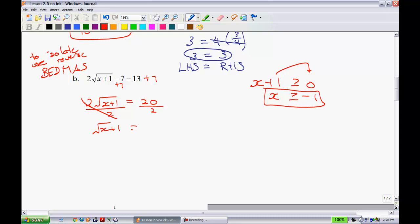We have the square root of x plus 1 is equal to 10. Now, in order to get rid of that radical sign, we're going to square both sides. We have x plus 1 now is equal to 100. And moving the one to the other side, we have x equal to 99. That's our solution.